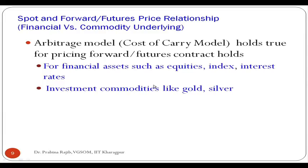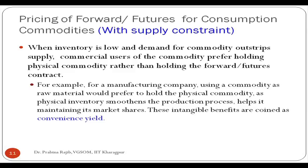Now let us consider a commodity with a supply constraint — meaning it is not freely available in the market. Agricultural commodities typically have supply constraints just before the harvest period. You may have noticed potato prices increasing substantially because the new crop has yet to arrive and not enough old crop is available. In such cases, the potato price can go significantly high at a given point in time, and the forward price may deviate from the cost of carry model.